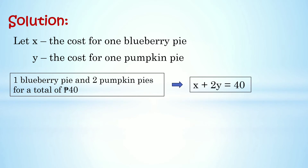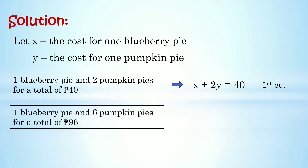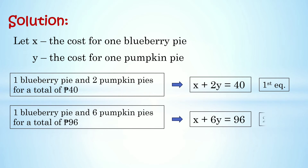Sa ating problem, we have one blueberry pie and two pumpkin pies for a total of 40 pesos — so iright natin siya as equation: x + 2y = 40. And then one blueberry pie and six pumpkin pies for a total of 96 pesos, so magiging x + 6y = 96. Meron na tayong two equations, so pwede na natin hanapin yung cost ng bawat pie.